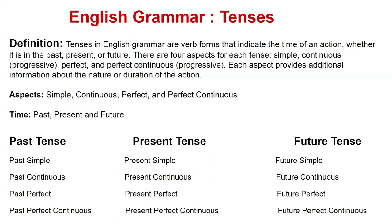So here is the definition: tenses in English grammar are verb forms that indicate the time of an action, whether it is in the past, present or future. Basically, tense indicates the time of action — that is when the action happened: in the past, present or future. And there are 4 aspects.